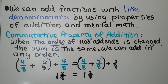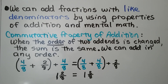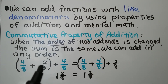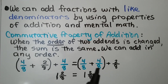We can add fractions with like denominators by using properties of addition and mental math. The commutative property of addition says when the order of two addends is changed, the sum is the same — we can add in any order. We put the 2 eighths on the outside of the parentheses and move the 4 eighths inside. The 4 eighths plus 4 eighths makes 8 eighths, which equals 1 whole, and we have the 2 eighths remaining, giving 1 and 2 eighths.